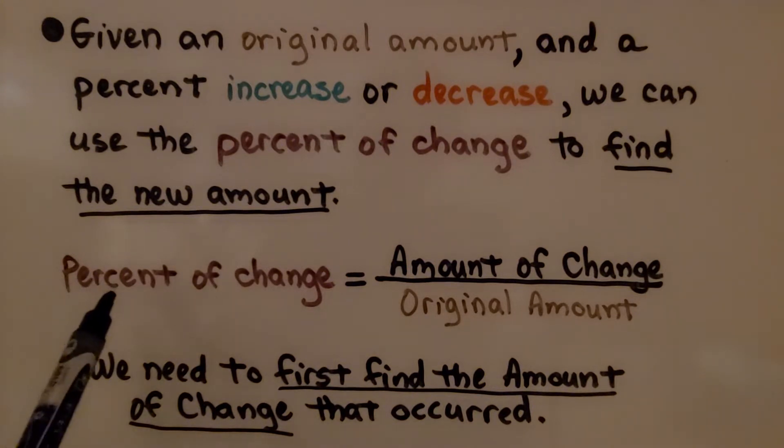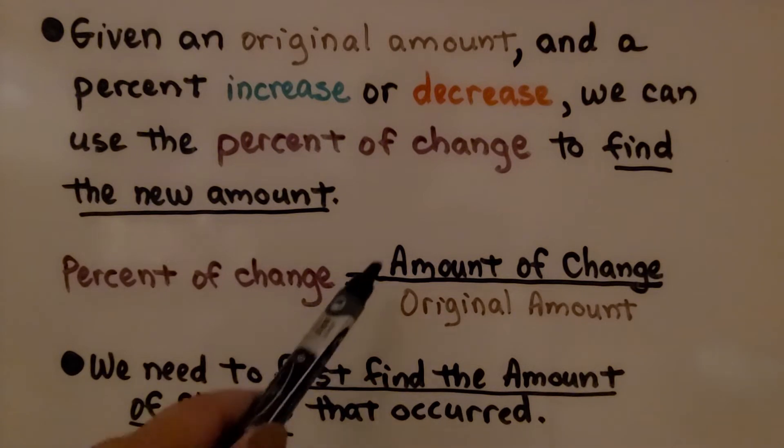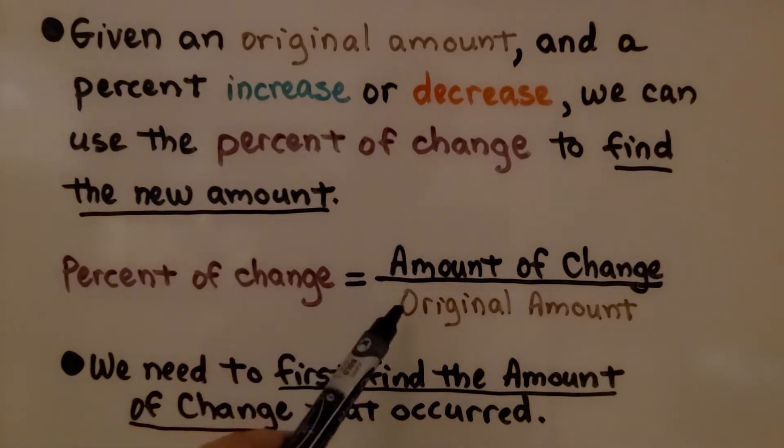We've learned in the last couple of lessons that the percent of change equals the amount of change divided by the original amount. We need to first find the amount of change that occurred.